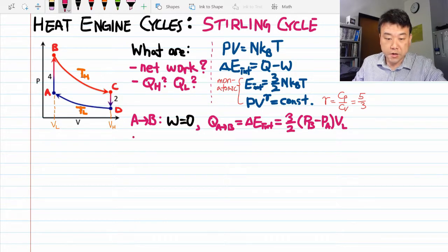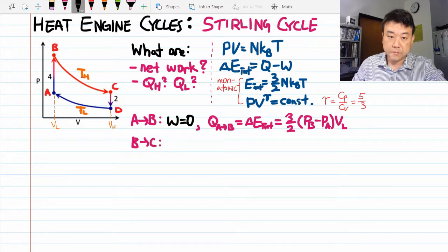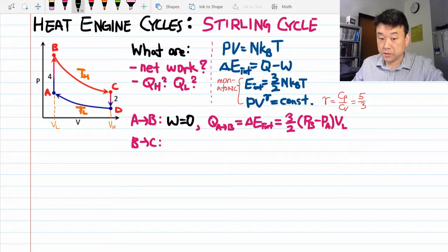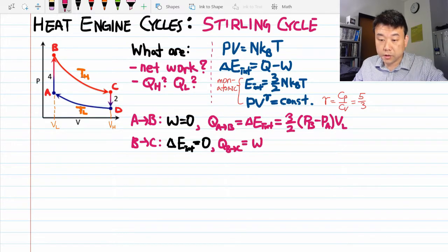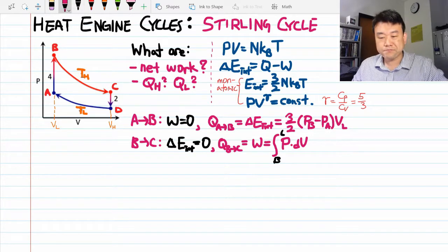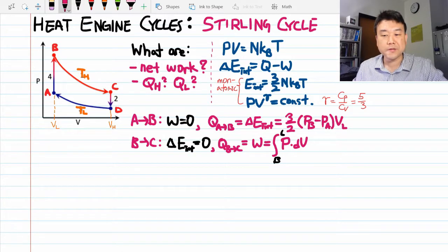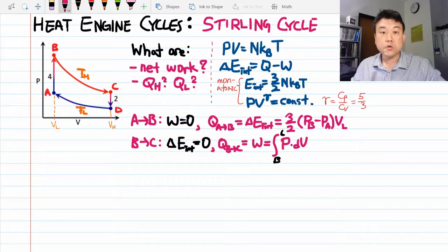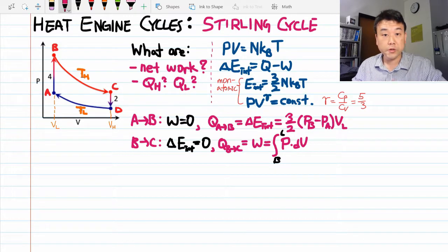Alright, now the isothermal expansion B to C. Since it's isothermal it says that the change of internal energy is zero. And the heat transferred is equal to the work done which we have to calculate by integrating pressure times volume from B to C. We've done this many times so let me write down the result here. If you want to find the process, you can go look at the video for the Carnot cycle or the video for the toy model too.